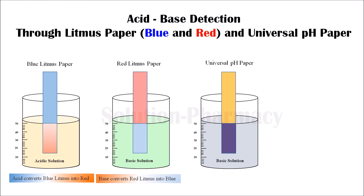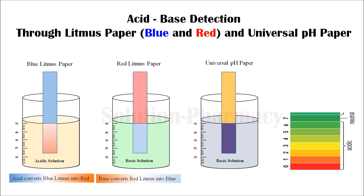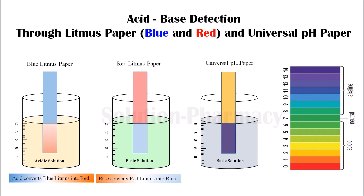By this color change we can get the approximate pH value of the solution. We have to match this color change with the pH color scale. Here you can see on the right side the universal pH scale, with different values represented by different colors. The color changes to dark blue, which matches the color at value 12 on the pH scale — which is alkaline — meaning the pH of our solution is approximately 12.